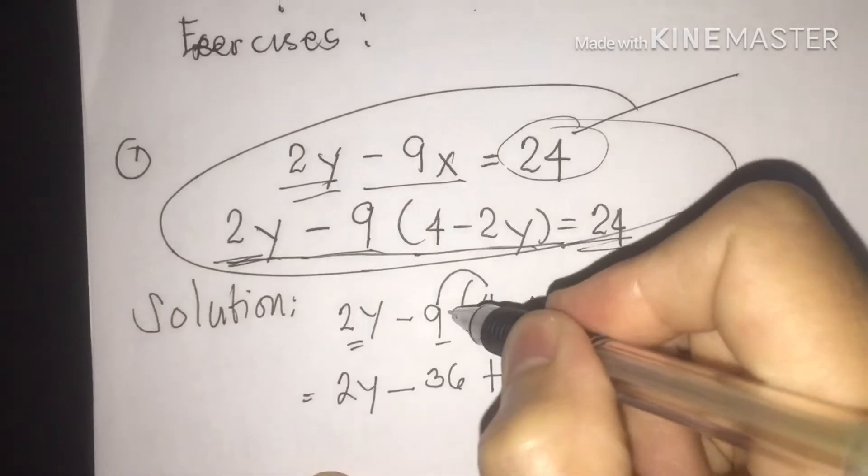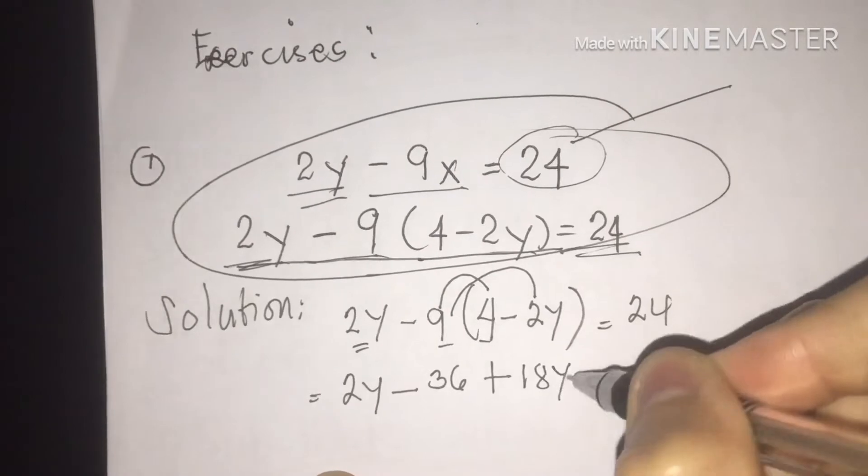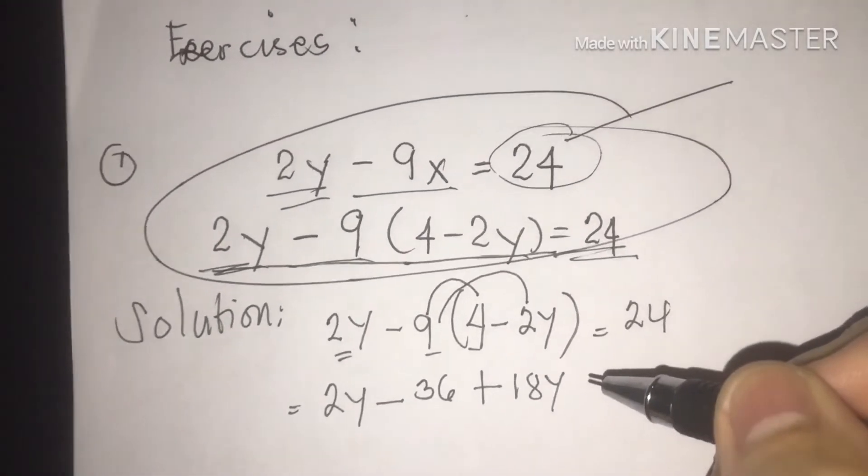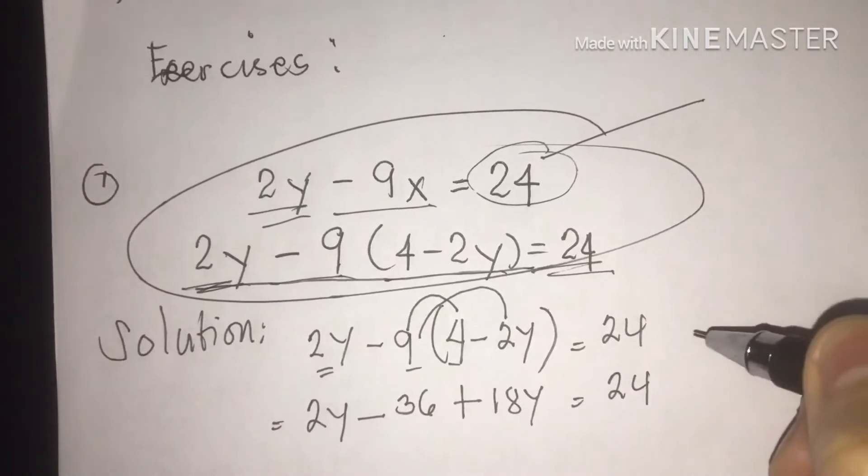Next, plus 2 times 9, we have 18y. That's positive. Instead of 2y as a greater variable, is equal to 24.